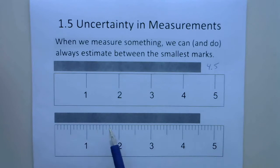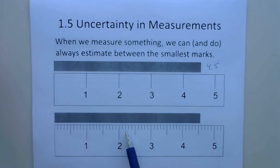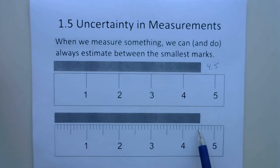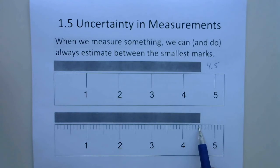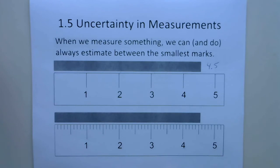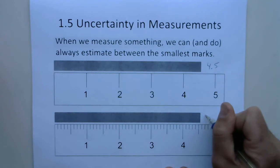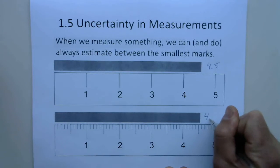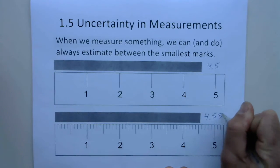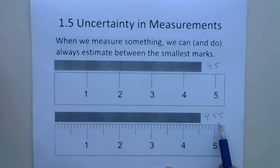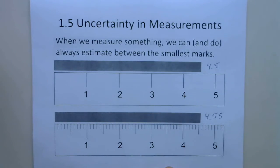Now down here, we're going to measure the same line but with a different ruler. This ruler has a mark every tenth of a centimeter. So here we can tell that the line we're measuring is between 4.5 and 4.6. We're going to estimate to the nearest hundredth since our instrument has a mark every tenth. So this one we might estimate as 4.55. The number of digits we record reflects the type of instrument that it was measured with.